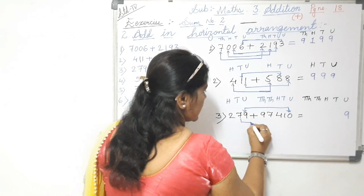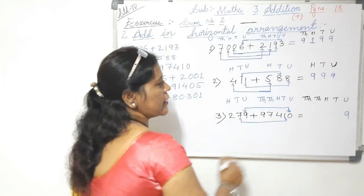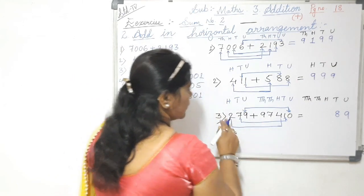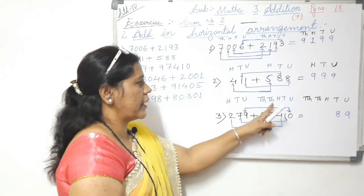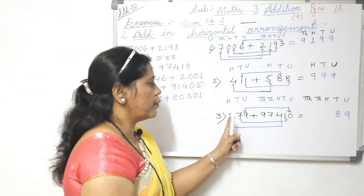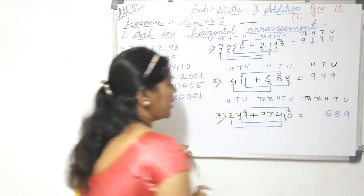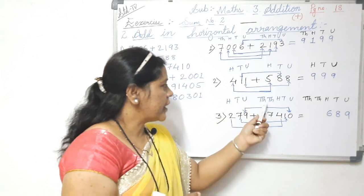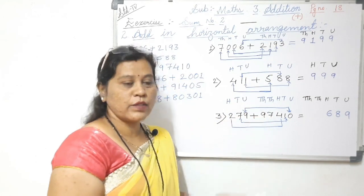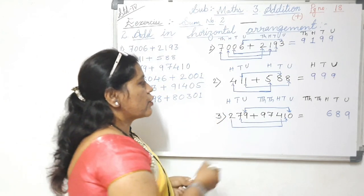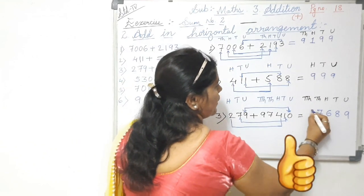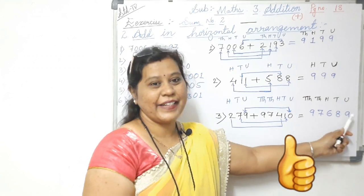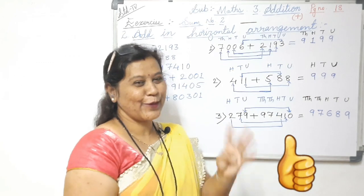Units plus units: nine plus zero is nine. Tens plus tens: seven plus one is eight. Hundreds plus hundreds: two plus four is six. Since the first number has no thousands or ten-thousands digits, we consider them as zero. Zero plus seven is seven and zero plus nine is nine. So the total is ninety-seven thousand six hundred and eighty-nine.